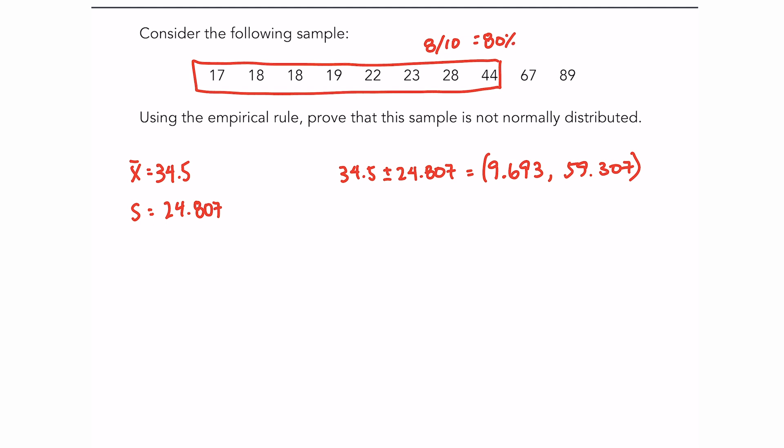So I've disproved the normal distribution by showing that the empirical rule is not respected here. 80% far exceeds 68. Now had I found 70, maybe I could say it's approximately, and then I would probably test two standard deviations and three standard deviations. But here we were able to prove just with one standard deviation that this set is not normally distributed. So that's it for this video. I hope you found it to be useful. If you have any questions of your own or if you found yourself struggling, please leave a comment and I will read it and get back to you as soon as I can.